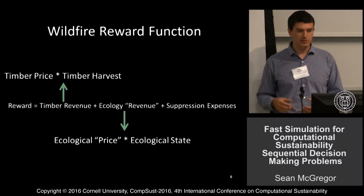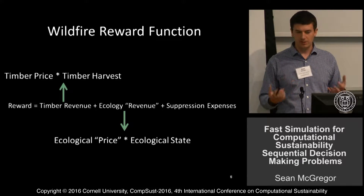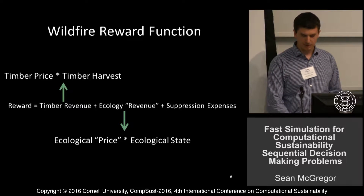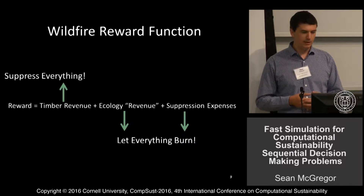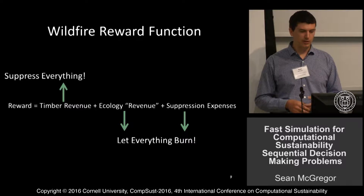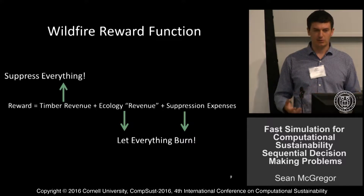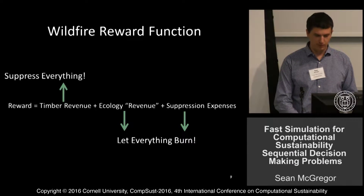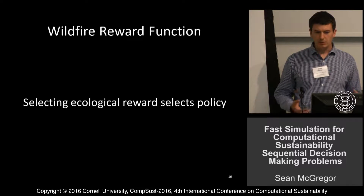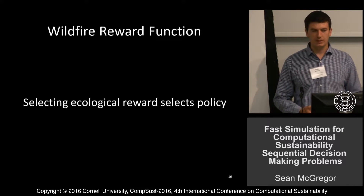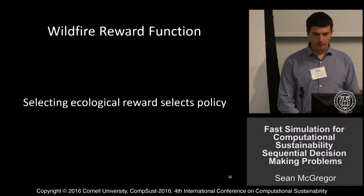One way the specification could change involves the reward function. One potential reward function in this domain combines timber revenue, some function for ecological value — valuing species just being present — and suppression expenses. These tug in different directions depending on other parameters. If trees are worth more, you might want to suppress more fires. On the ecology side, since we're modeling a fire-prone landscape that historically had much more fire, we'd want to let everything burn because that was the natural circumstance producing species distribution. So how much we reward the ecological state will push us toward letting fires burn, while not valuing it makes timber more valuable and pushes us toward suppressing more fires.